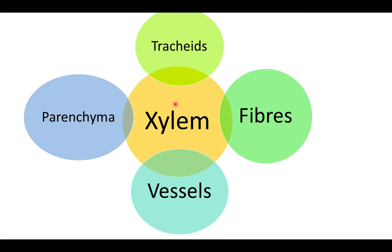Xylem consists of four parts: tracheids, xylem parenchyma, vessels, and xylem fibers. Among these, tracheids and vessels are the most important — they allow the xylem to transport water and minerals.